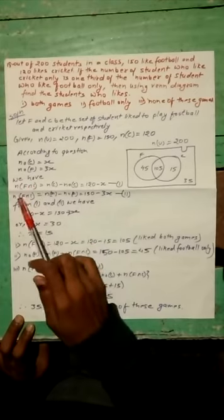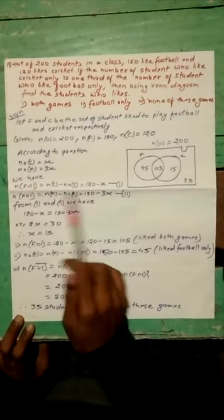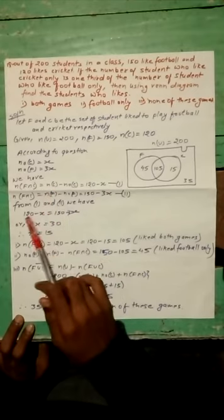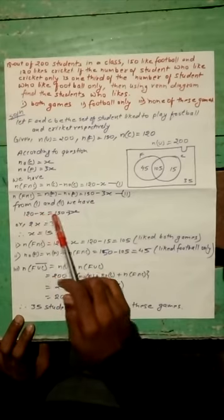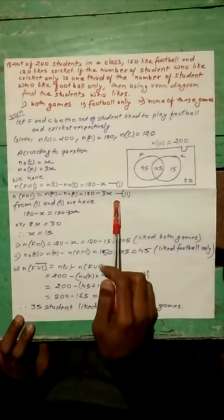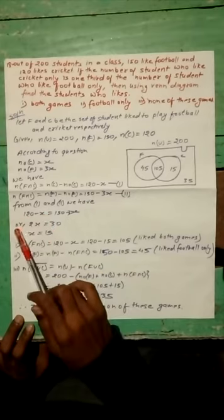Because both intersections, F intersection C, are the same. So equating equation 1 and 2, we have 120 minus X equals 150 minus 3X.